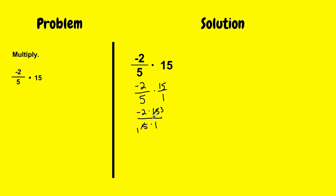And next, I'm just going to multiply. So I have negative 2 times 3 in my numerator. And in the denominator, I have 1 times 1, which simplifies to negative 6 over positive 1. And negative 6 divided by 1, I get an answer of negative 6. So negative 2 over 5 times 15 equals negative 6.